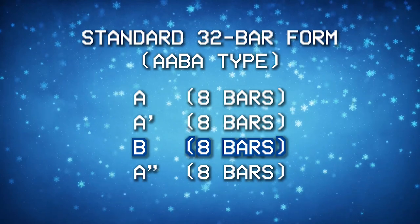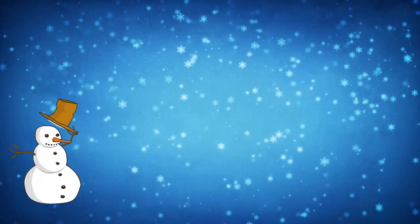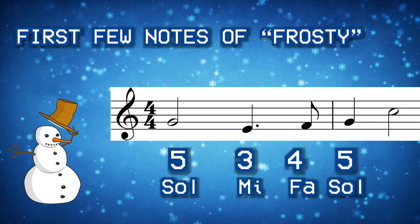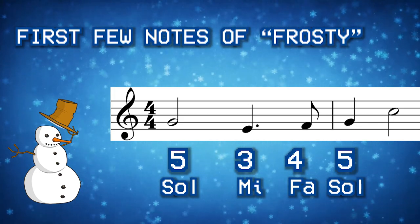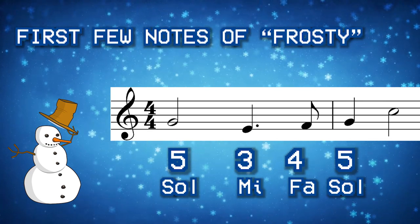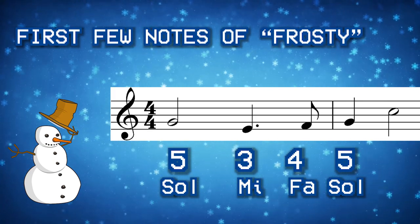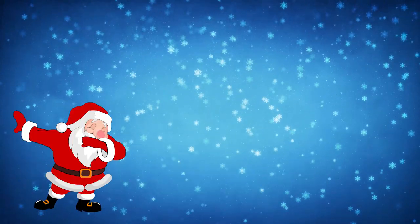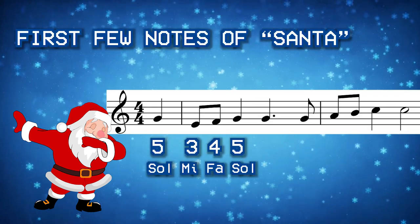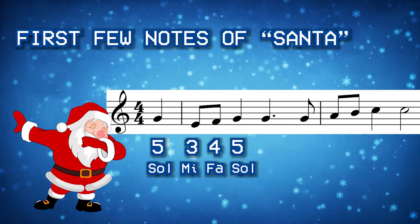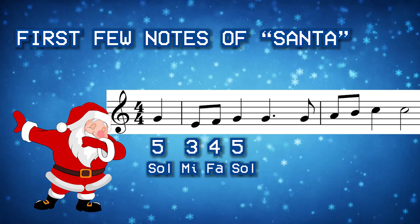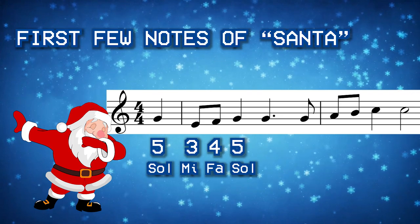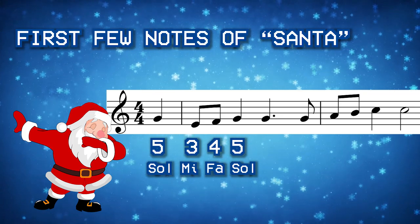The most significant similarity is in the B section, but let's briefly talk about the A section of Santa Claus is Coming to Town and Frosty the Snowman. Frosty the Snowman starts like this — if we're talking scale degrees, this song starts with 5-3-4-5: sol, mi, fa, sol. Santa Claus is Coming to Town also starts with sol, mi, fa, sol. So that's one explanation for why people get those two songs mixed up.